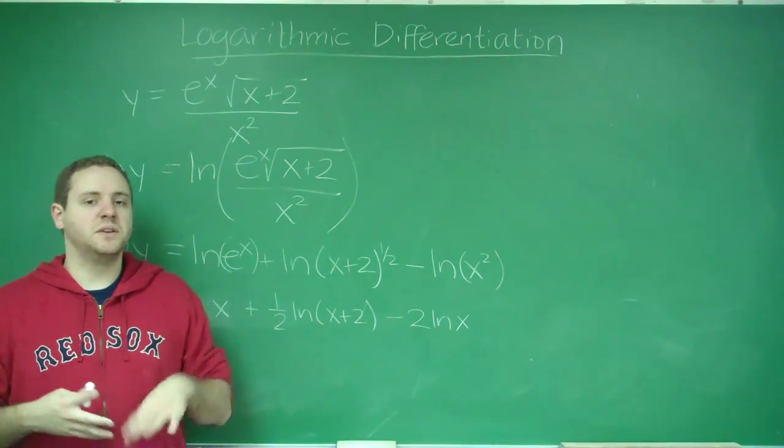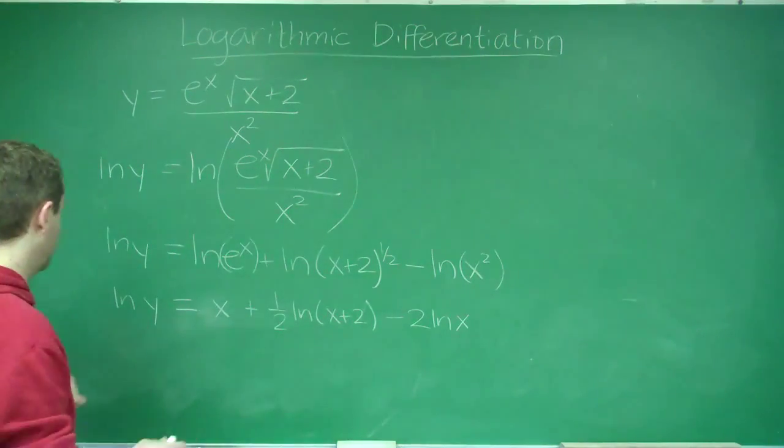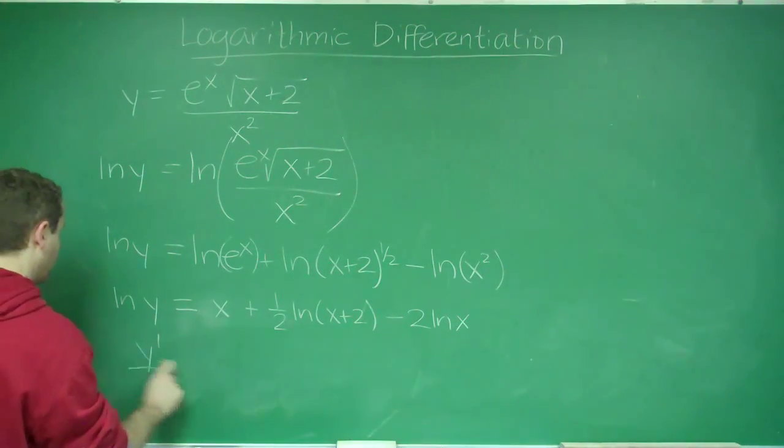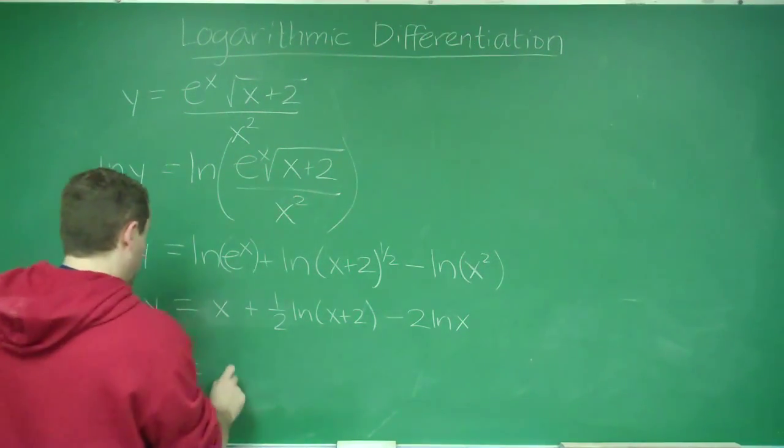Now we've got it as simplified as possible. This is the best time to take the derivative because now all your derivatives are going to be as easy as they could possibly be. Here we get our y prime over y when we take the derivative of ln y. The derivative of x is 1.